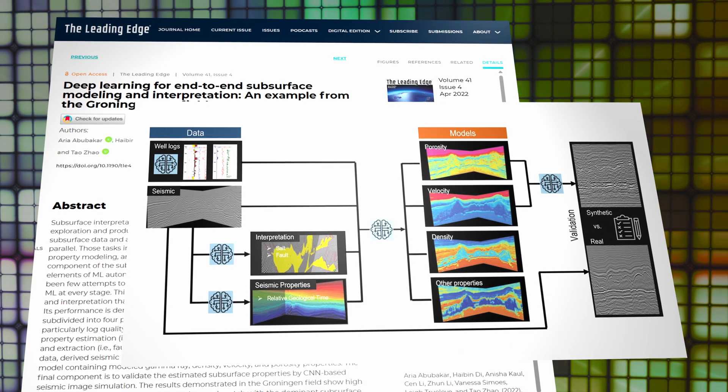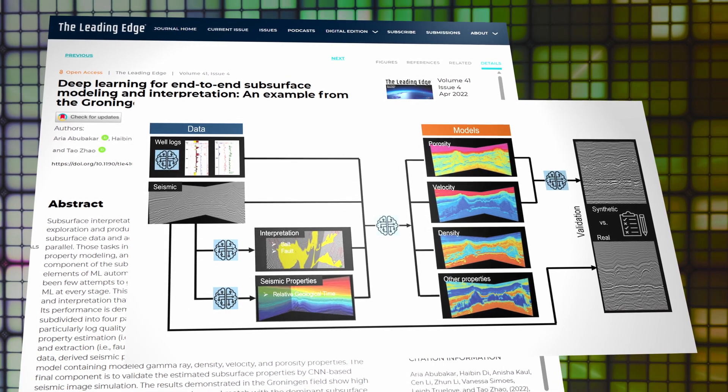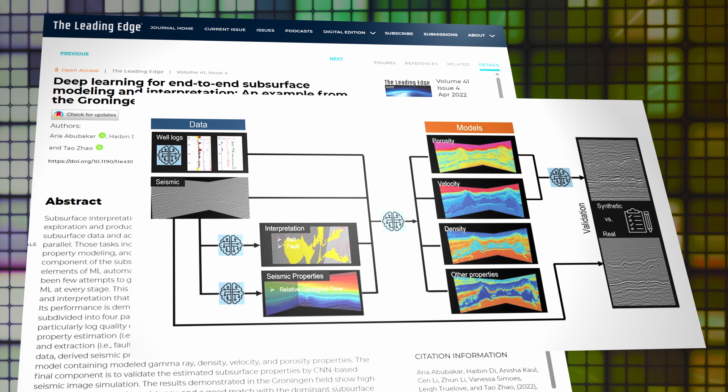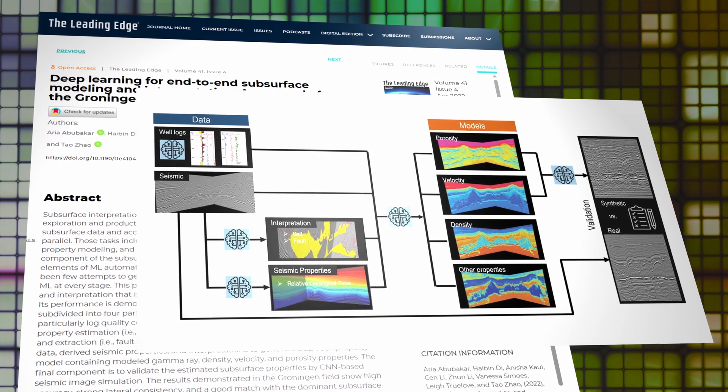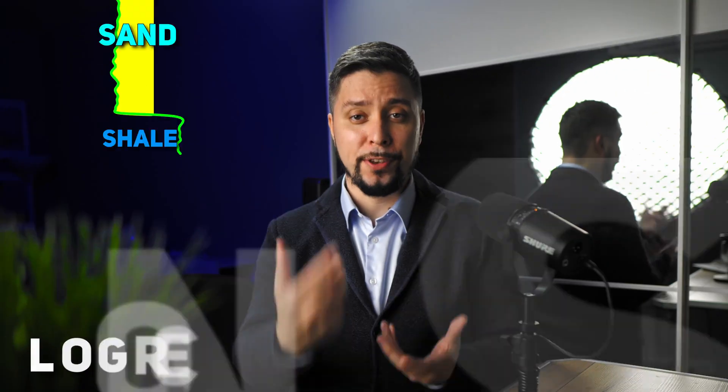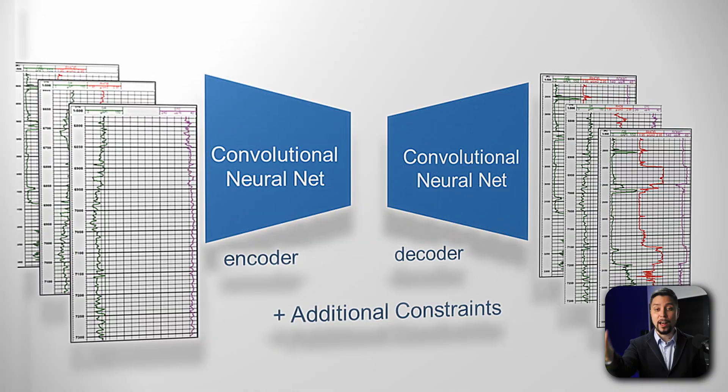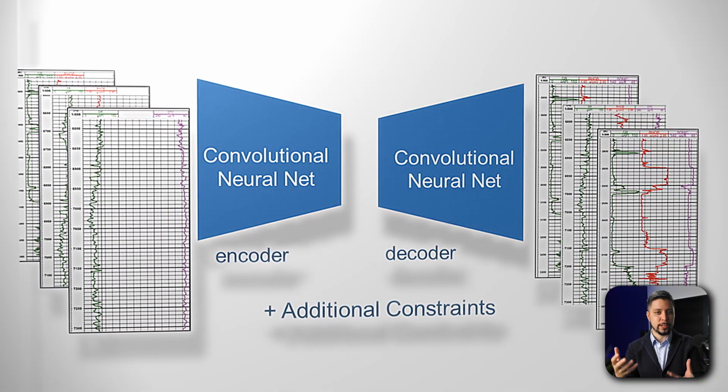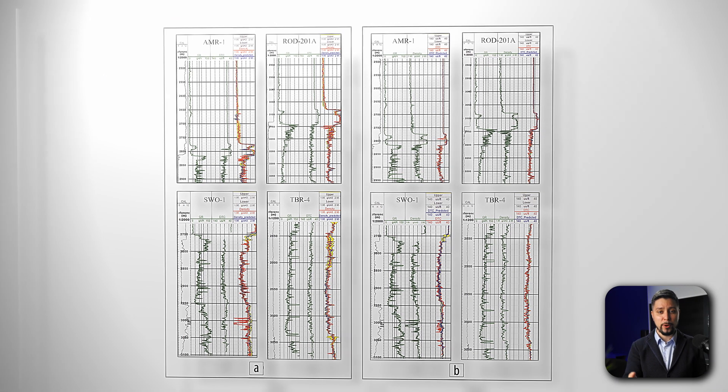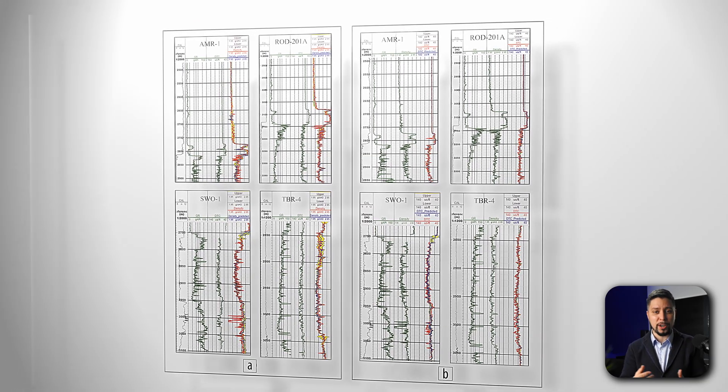They've managed to bring together multiple deep learning techniques, which makes the whole process more efficient and accurate. The first part of this workflow is about fixing the missing well log data. They use a CNN model to reconstruct density and sonic logs. They train a CNN model on 130 wells and validate it on 23 wells.